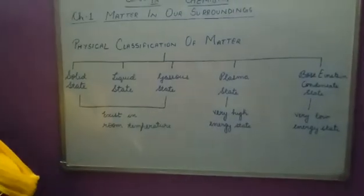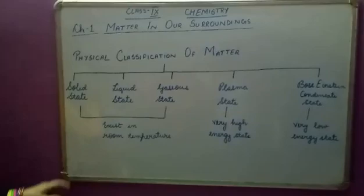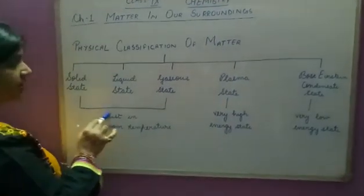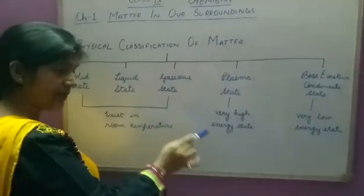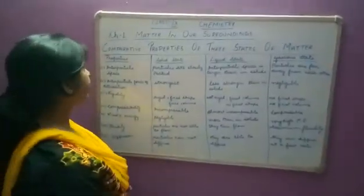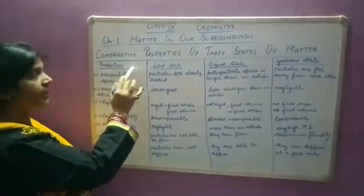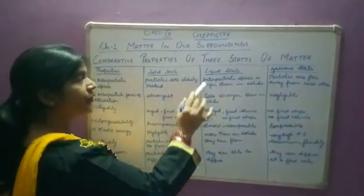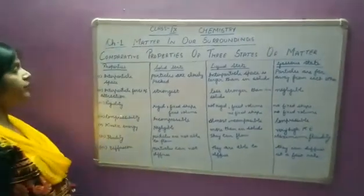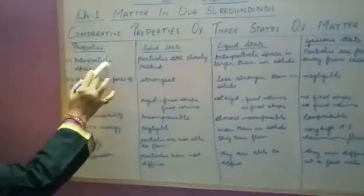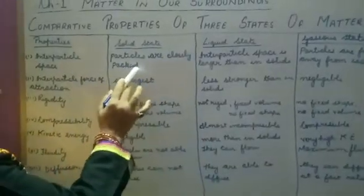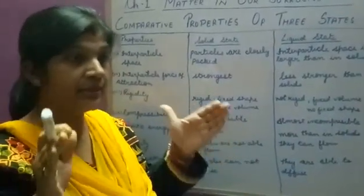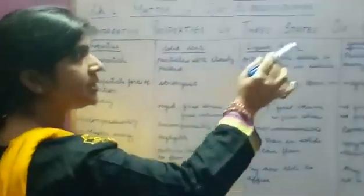In this chapter, we will study about the properties of only the first three states of matter: solid state, liquid state, and gaseous state. Now we will study the comparative properties of these three states. The first property is inter-particle space. In solid state, particles are closely packed, which means that inter-particle space is the least among these three states.